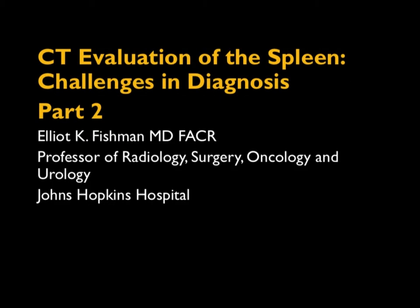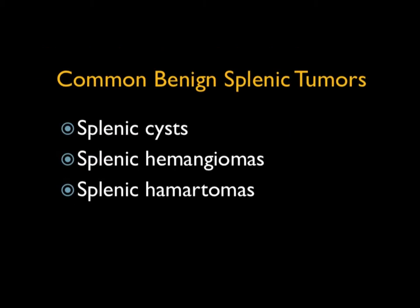Hi, this is Elliot Fishman and welcome to part two of the spleen, one of your favorite organs no doubt. Let's start with looking at some of the common benign splenic tumors. In general, most lesions in the spleen, if you do not have a known malignancy, are going to be benign. We think of three: splenic cysts, hemangiomas, and hematomas.